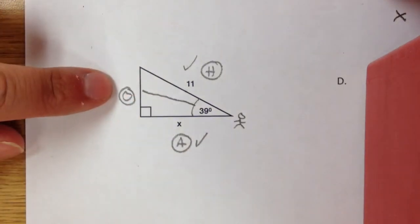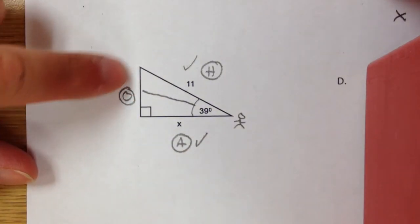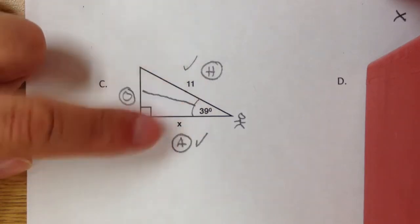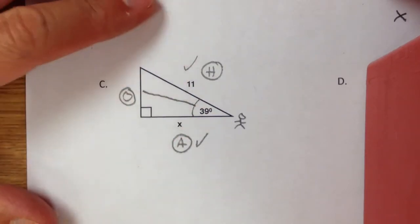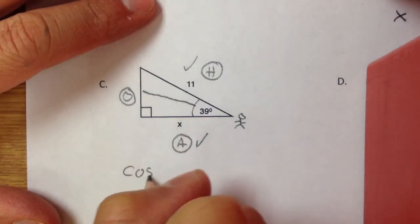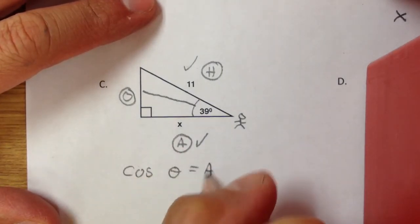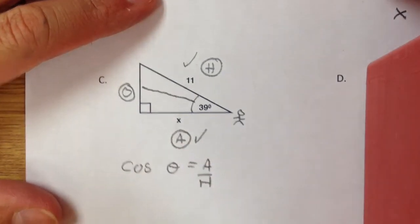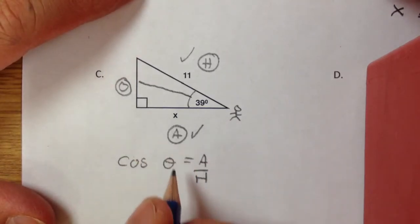You don't have to use the O side, and you don't want to because there's no information given there. So you're just using A and H, which would be cosine. You write out your formula, then plug everything in just like you did in the other examples.